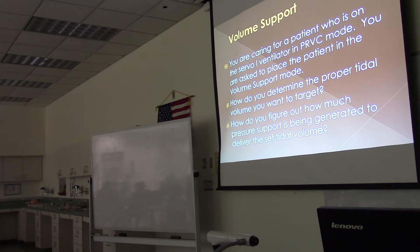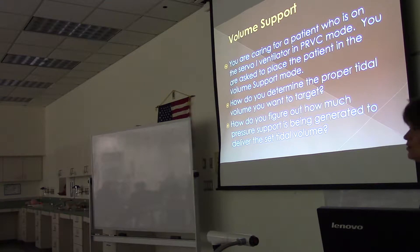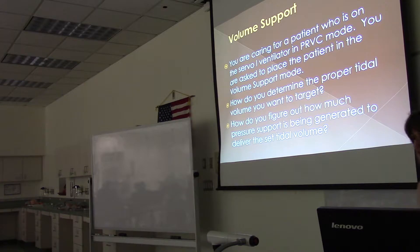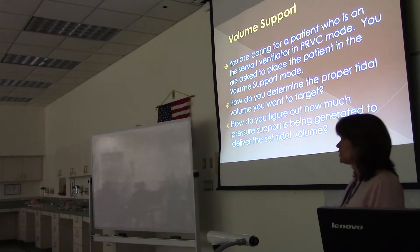You are caring for a patient who is on the Servo-I ventilator in PRVC mode. You are asked to place the patient in volume support mode. How do you determine the proper tidal volume you want to target? Can you give me a range of mLs per kilo? 5 to 7. Very good — normal tidal volume is 5 to 7 mLs per kilogram ideal body weight, so that's what you would target.